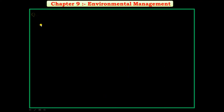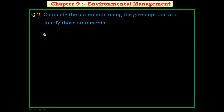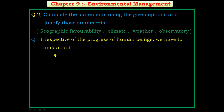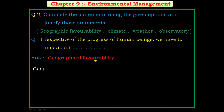Question number C of question number 2: irrespective of the progress of human beings, we have to think about dash dash — and the answer is geographical favourability.